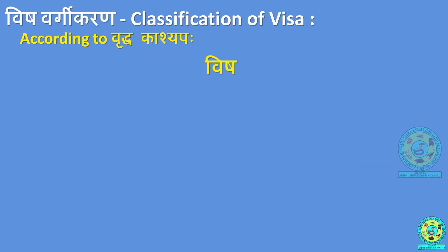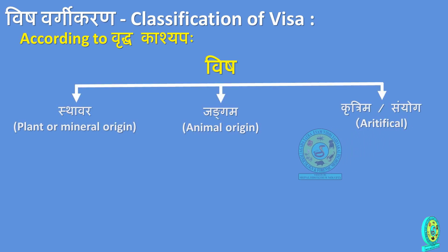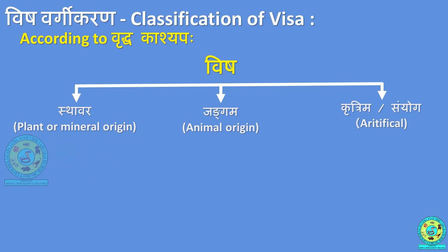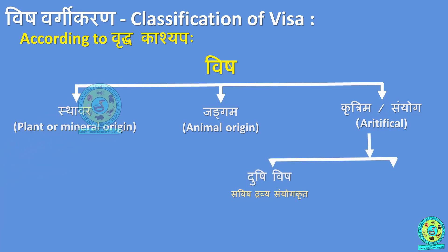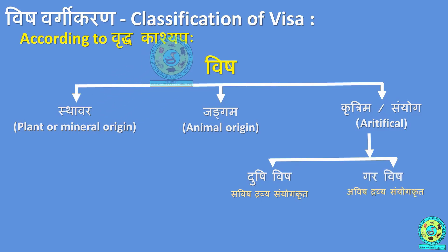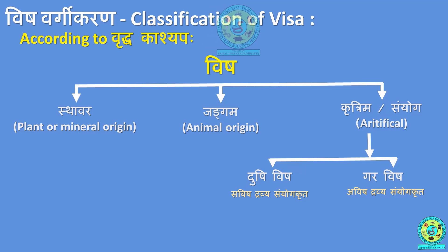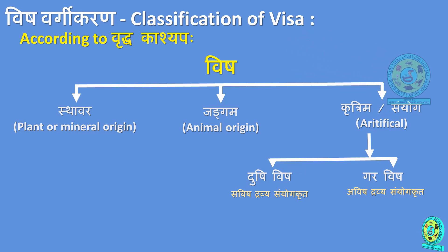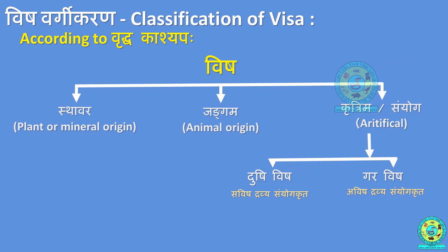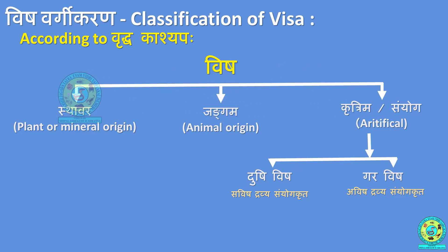According to Acharya Vrithakashyapam, Vishah is classified into Sthavara, Jangama, and Krittrimavisham, also called Samyogavisham. Krittrimavisham is further classified into two categories: Doshivisham, which is Savishadravya Samyogakrita — a combination of different Vishadravyas; and Garavisham, which is Avishadravya Samyogakrita — a combination of non-poisonous substances that on combination becomes Visham.